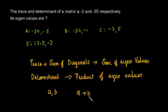is minus 2 and a b is minus 35. We have to look for options which satisfies this condition.